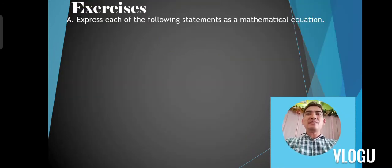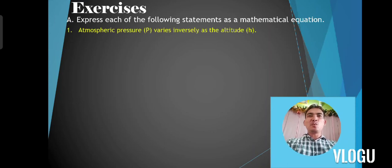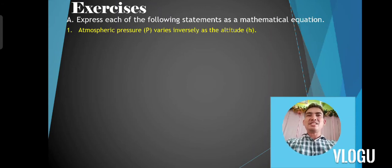Let's have Exercise A: express each of the following statements as a mathematical equation. Number one: atmospheric pressure varies inversely as the altitude. The correct answer is P is equal to K over H, or K is equal to P times H.